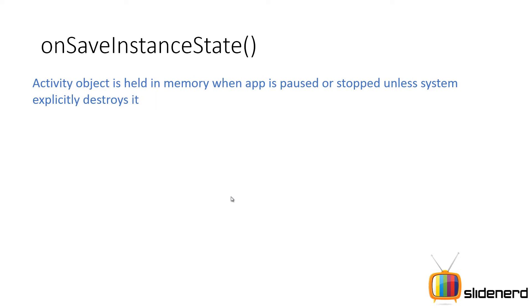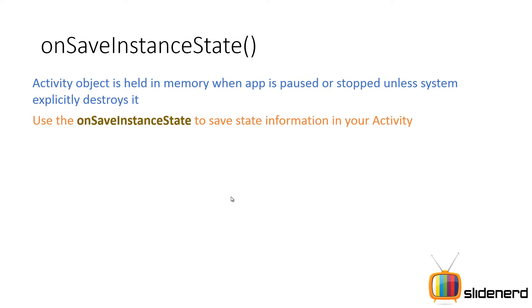Your activity object is always held in memory when the app is paused or destroyed, unless your system has no memory left. So whenever your activity is paused, OnSaveInstanceState is called to save information. There are two types of information: one is the database kind, and the other is something you temporarily need. For example, if you're playing Temple Run on your Android app, you need to keep track of the score. Just because you rotate the device, the score doesn't become zero. Those kinds of information, needed only when your app is running, are stored inside your OnSaveInstanceState method.